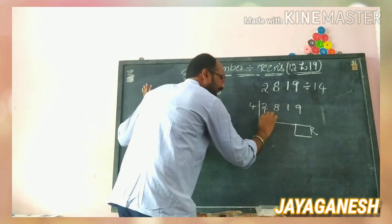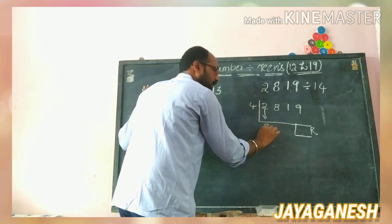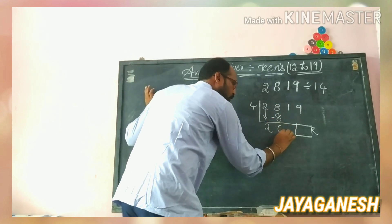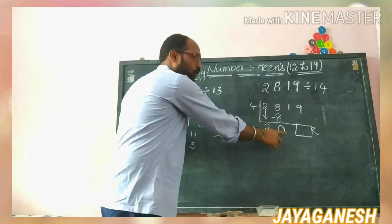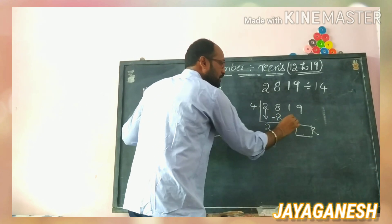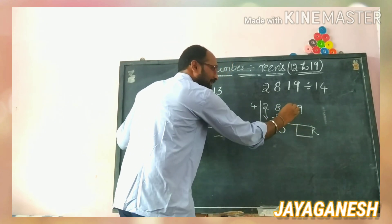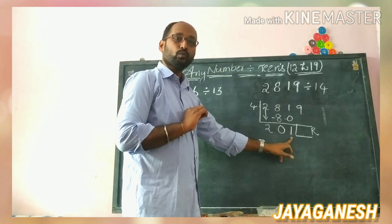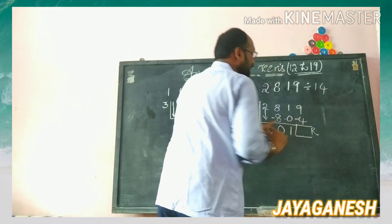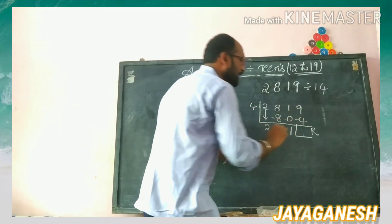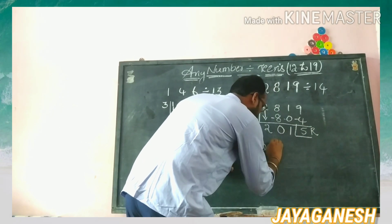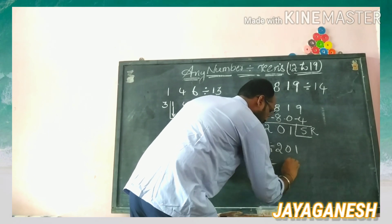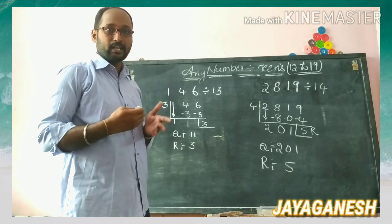Now drop the first digit as it is — I dropped it. Then four times two is eight, write eight here and do subtraction: eight minus eight is zero. Again, four times zero is zero, then doing minus one: zero minus one is one. Then again, four times one is four, so nine minus four is five. My quotient is 201 and my remainder is five.